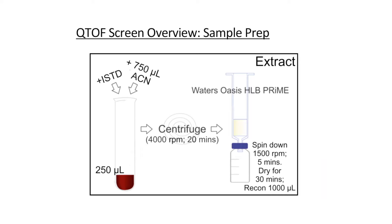I start with 250 microliters of either blood or serum. I add an internal standard. I'll precipitate out the proteins using acetonitrile as the organic solvent. The samples are centrifuged for 20 minutes, followed by SPE extraction using a Waters Oasis HLB Prime cartridge.